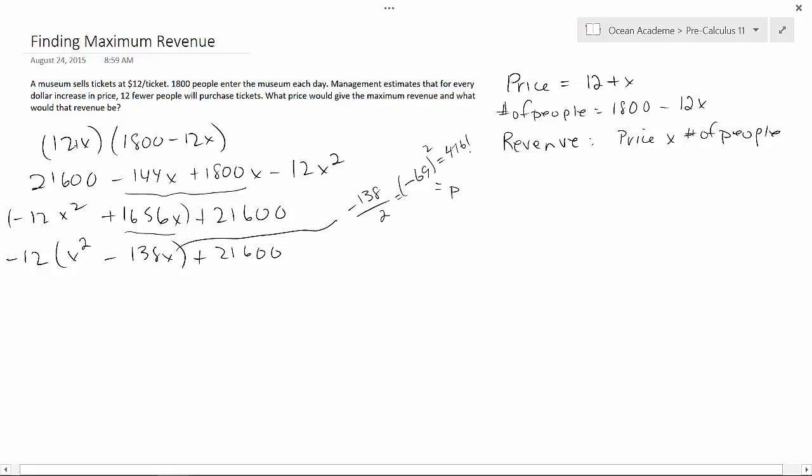Okay, now going back, we've got minus 12X squared minus 138X. Now, we take this number here. So we add it, 4,761, and we subtract it, 4,761, close bracket, plus 21,600.